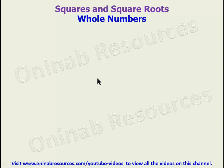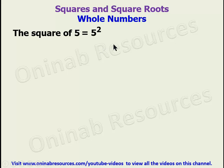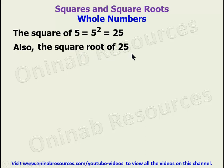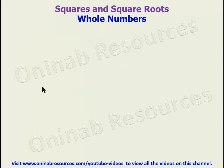Hello, welcome to this mathematics lesson on squares and square roots. In this video we'll be looking at whole numbers. The square of 5 means 5 to the power of 2, which is the same as 5 times 5, and 5 times 5 is 25. The square root of 25 is written as √25. Since 5 times 5 is 25, therefore the square root of 25 is 5. This is the relationship between the square of a number and its square root.